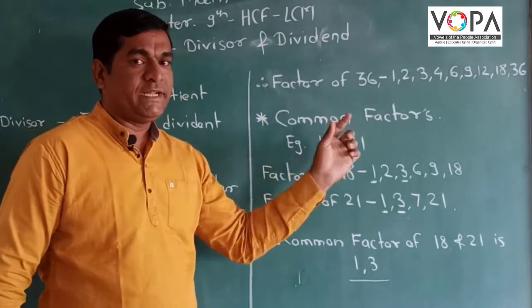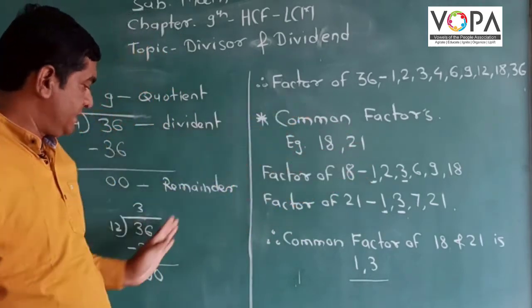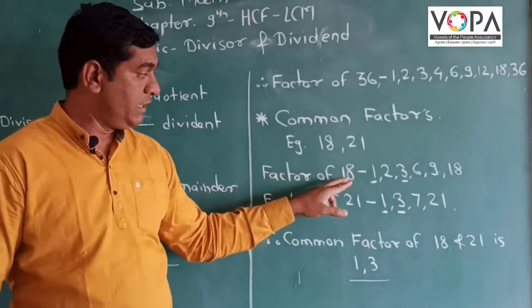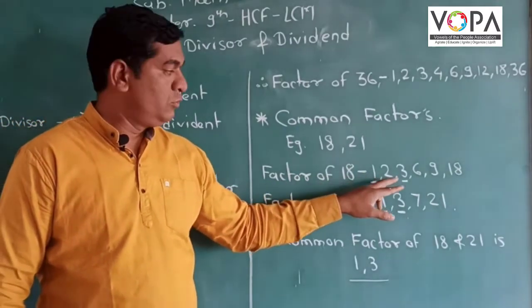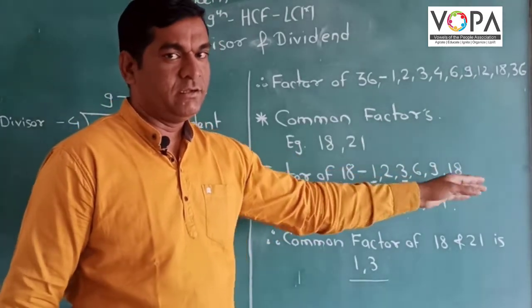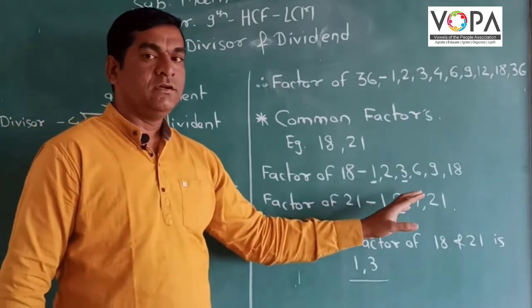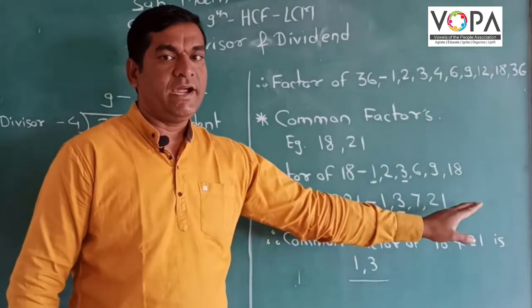What is a common factor? Take 18 and 21 as an example. The factors of 18 are 1, 2, 3, 6, 9, and 18. The factors of 21 are 1, 3, 7, and 21.